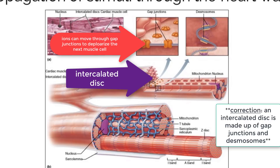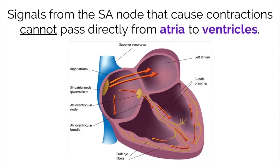Additionally, these cells have much more mitochondria compared to other body cells, as they are always working to keep the heart beating.